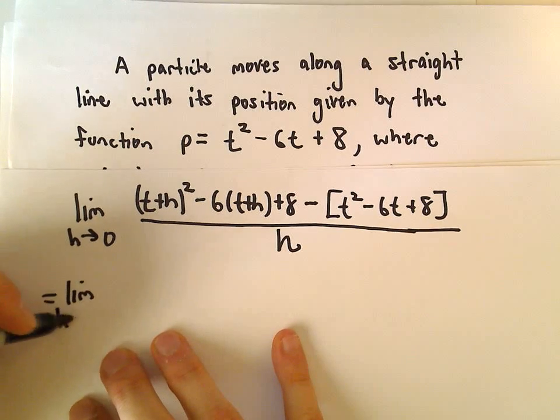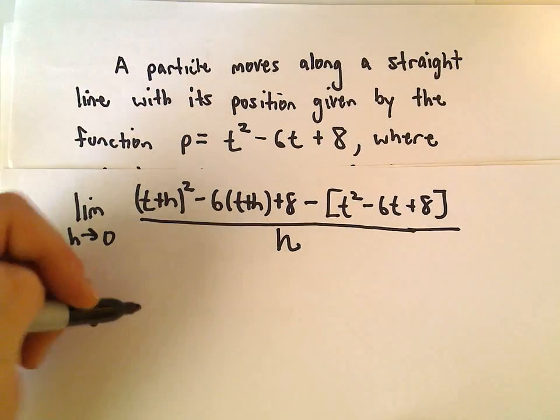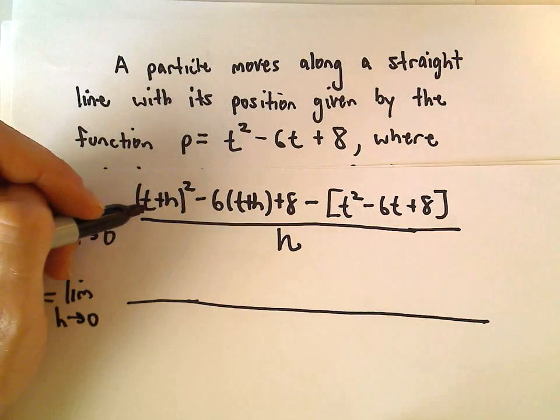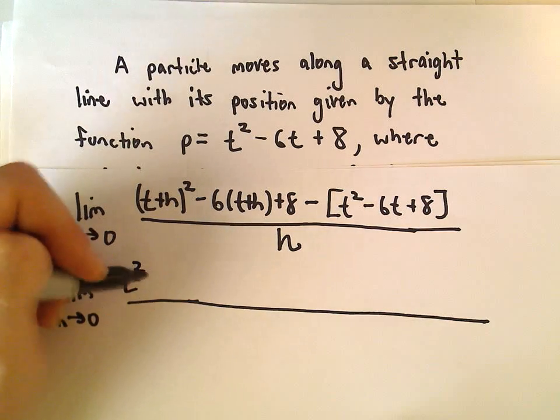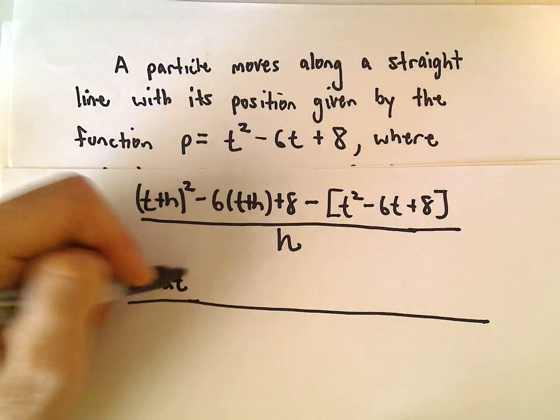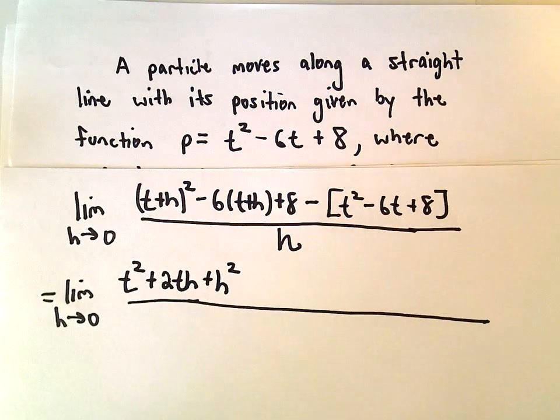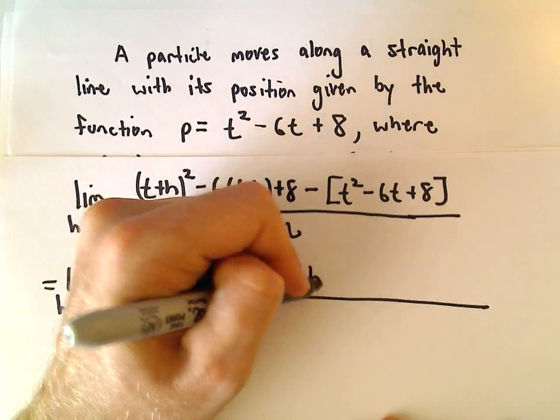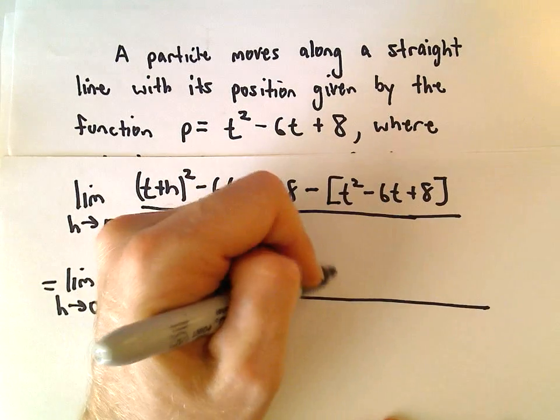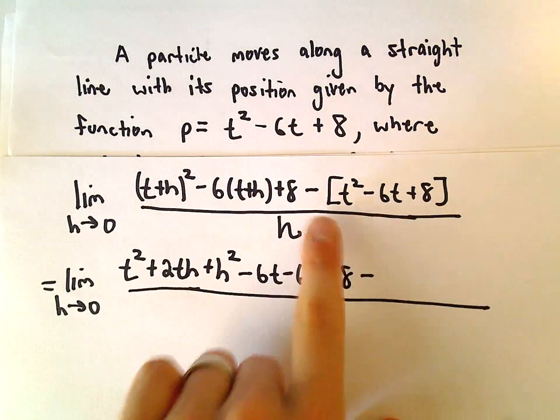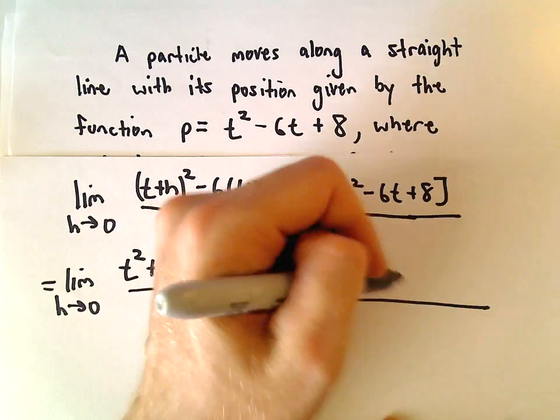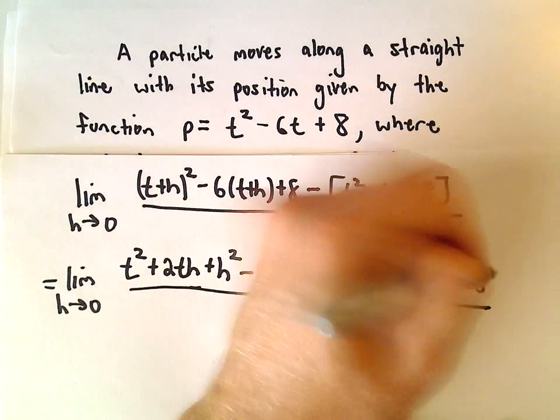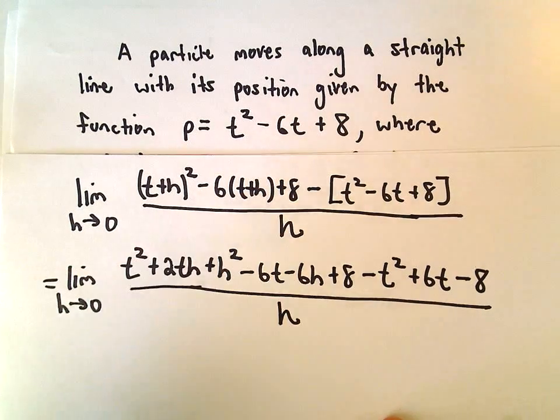So, again, it's just a matter now of expanding the numerator and collecting like terms. So t plus h squared is going to be t squared plus 2t times h plus h squared, and then we'll get negative 6t minus 6h when we distribute, plus 8, and then when we distribute our negative sign, we'll have negative t squared plus 6t minus 8, all over h.